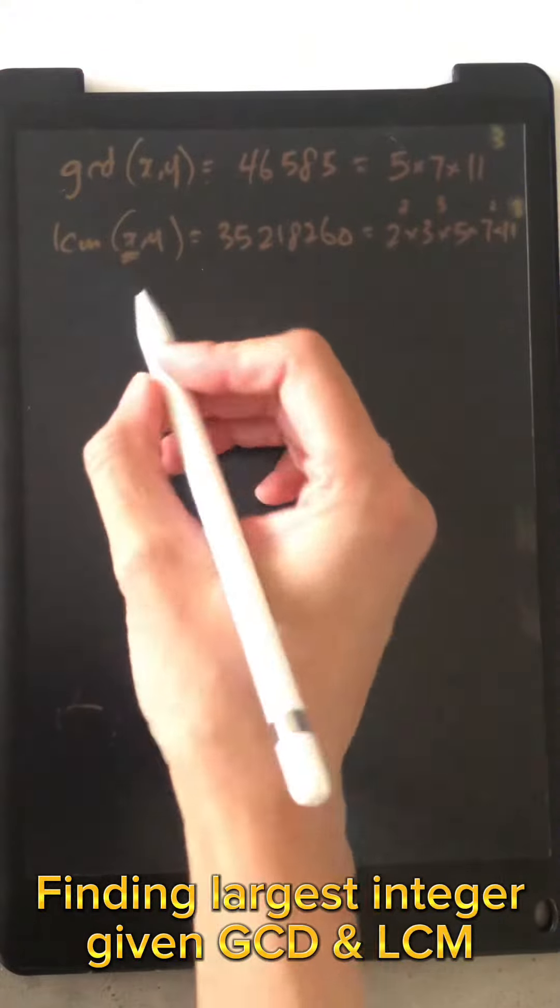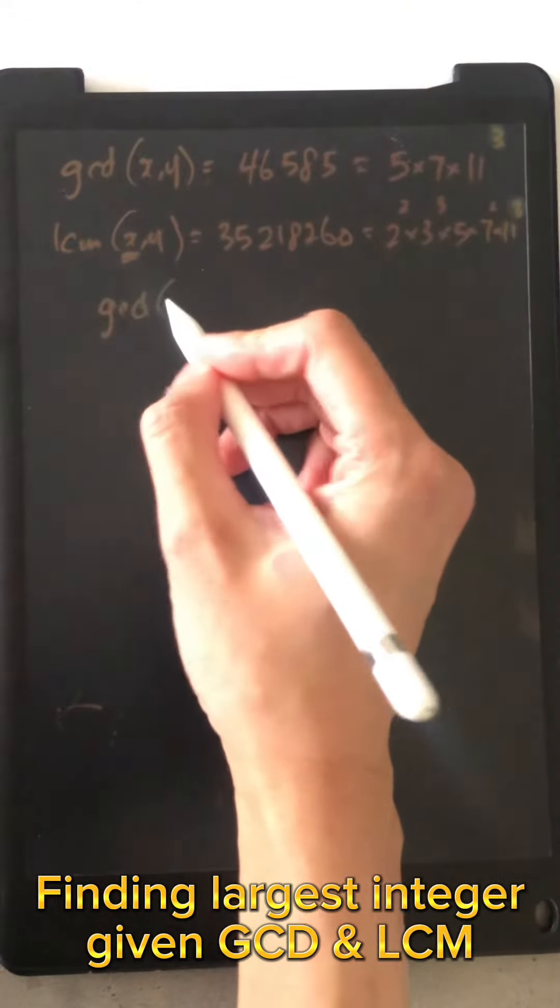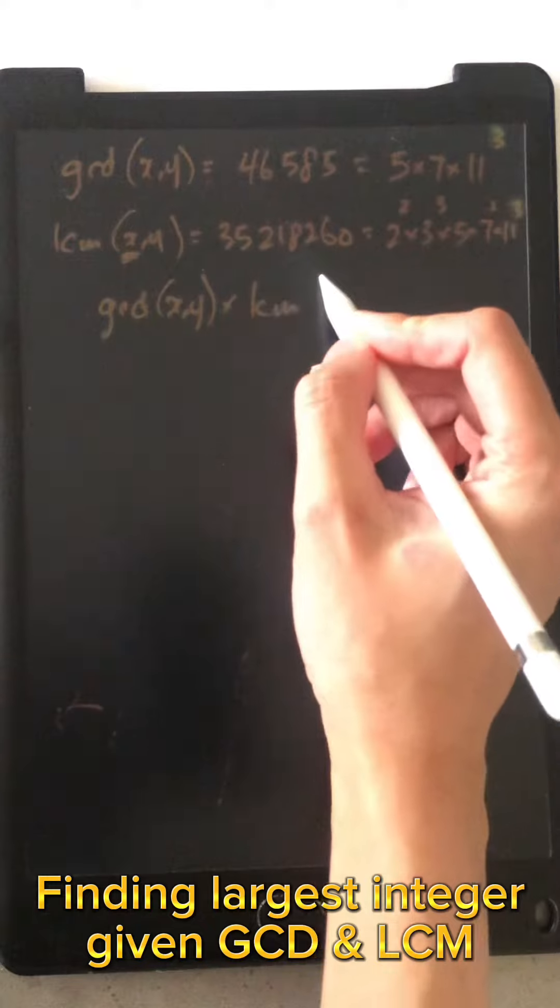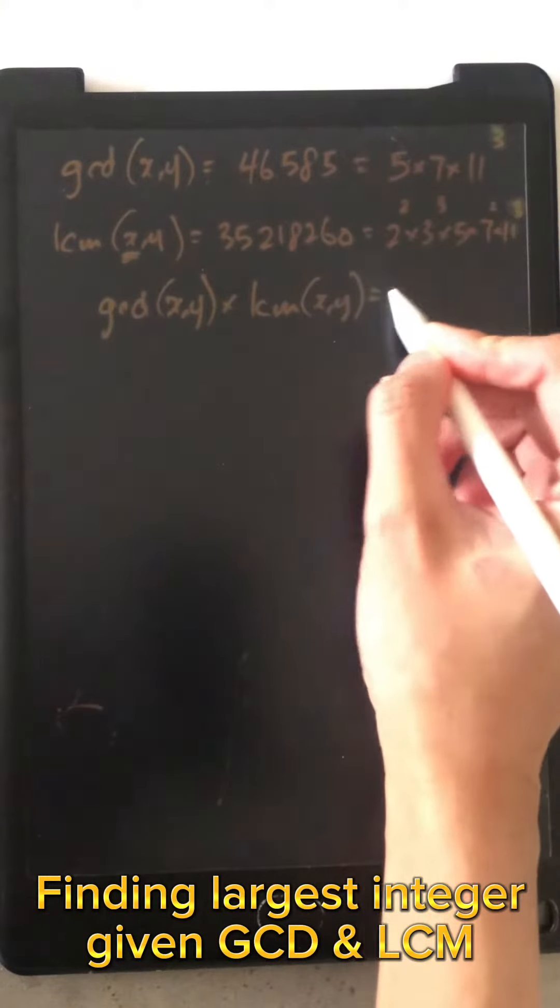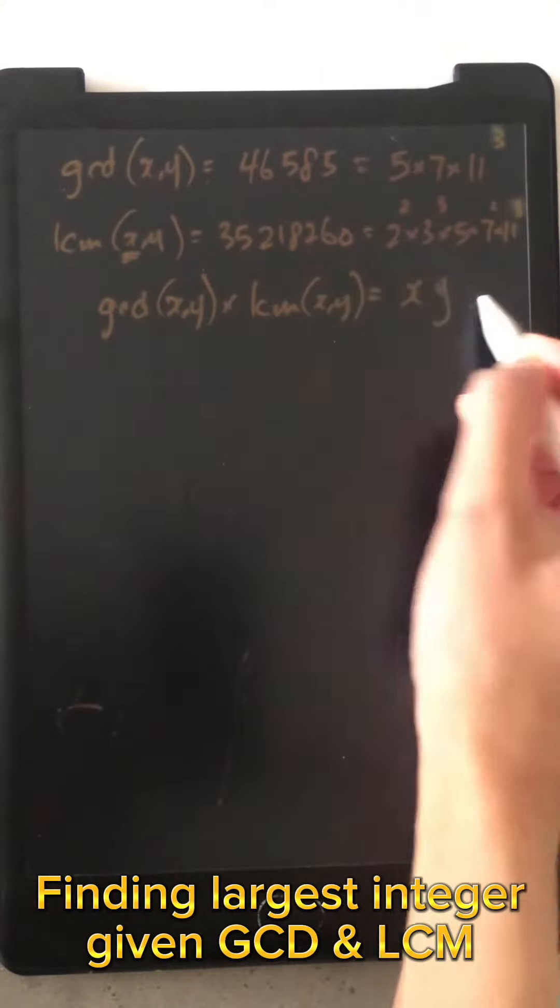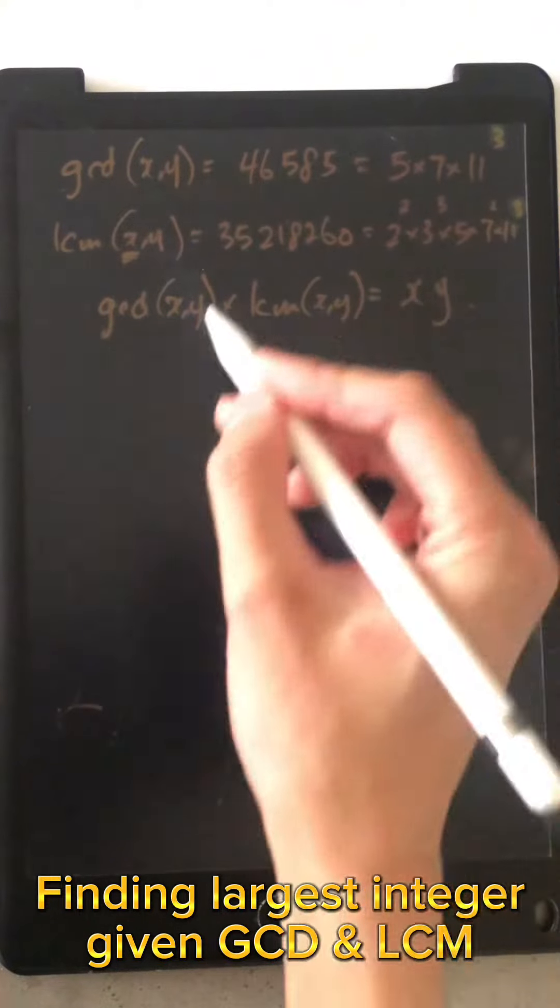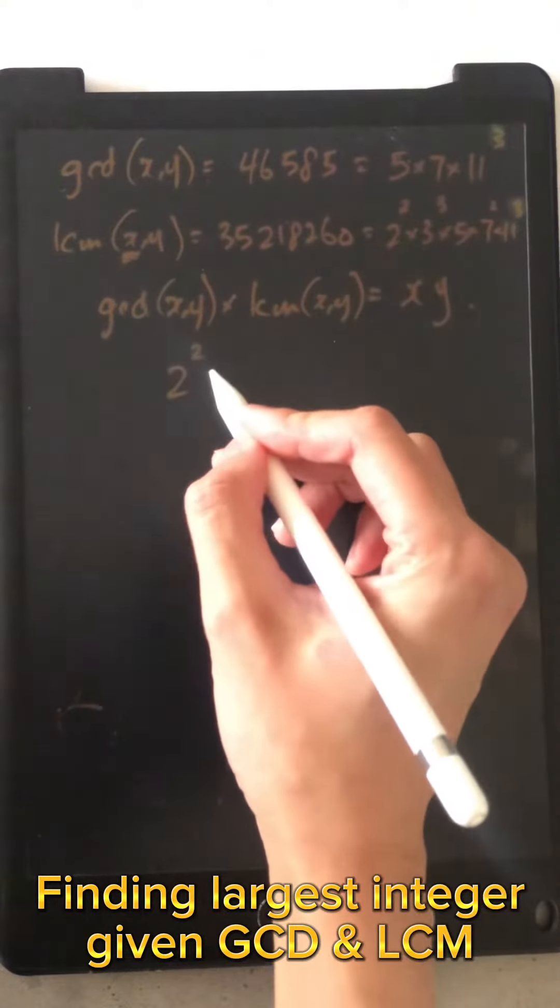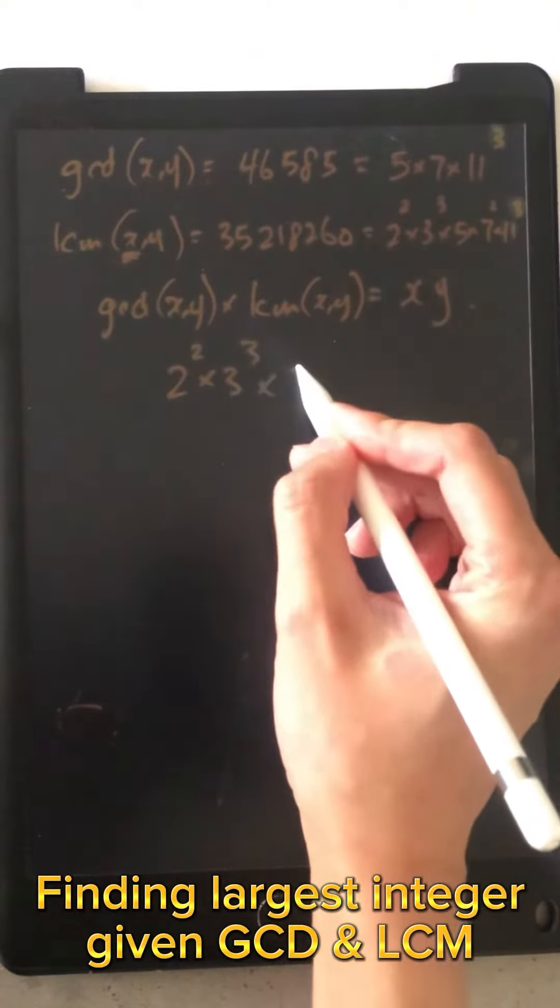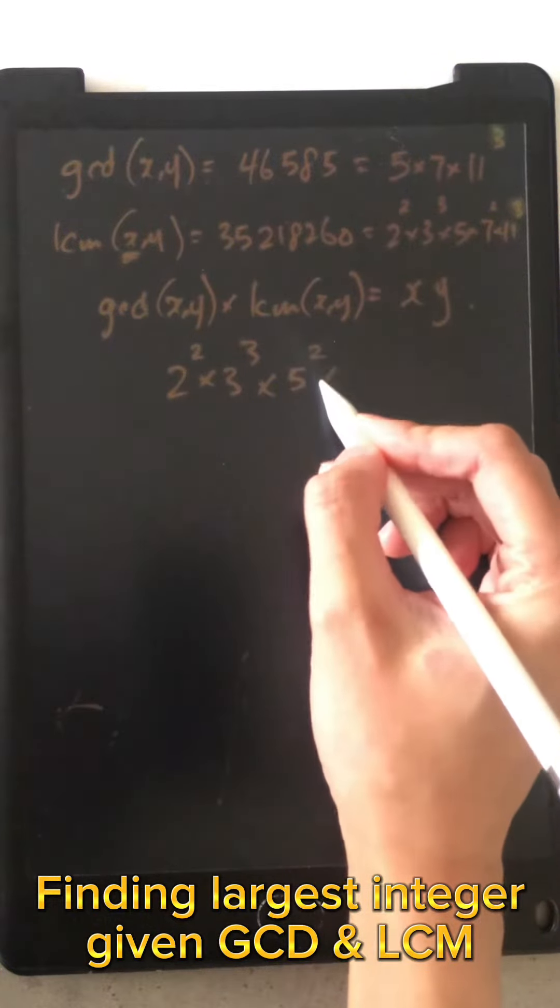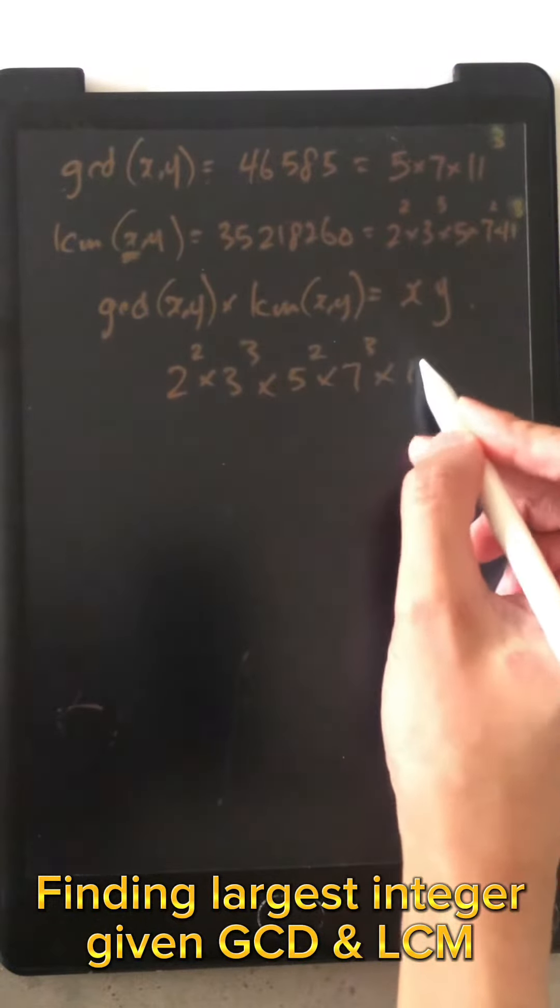So what we want to do is, we know that the GCD of the two numbers multiplied by the LCM will be the product of x and y. And so we know that the total will be 2 squared times 3 cubed times 5 squared times 7 cubed times 11 to the power of 6.